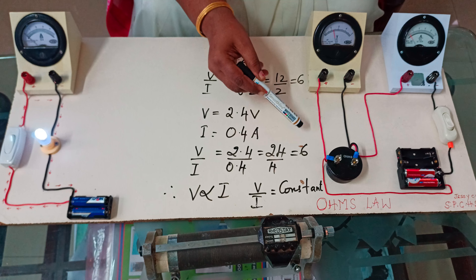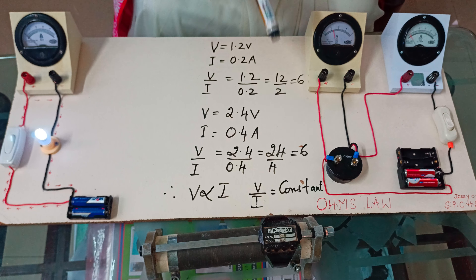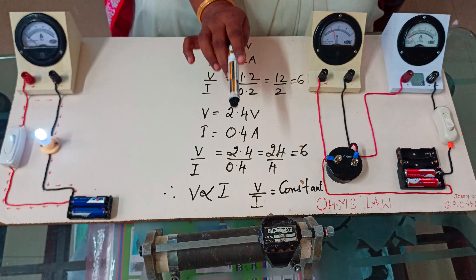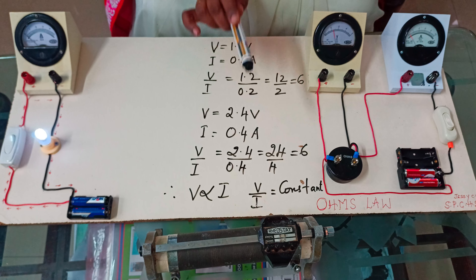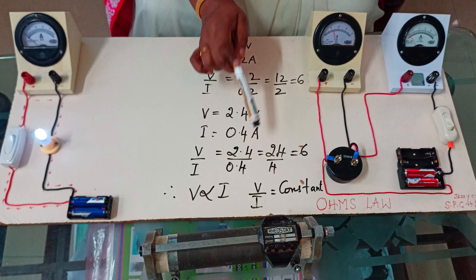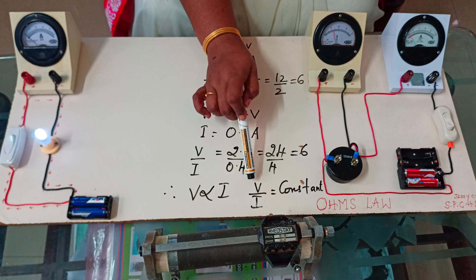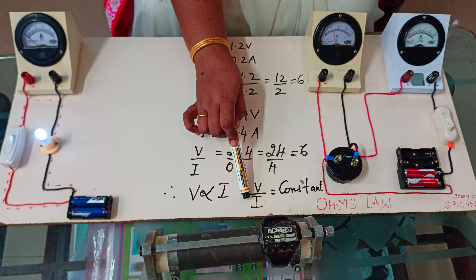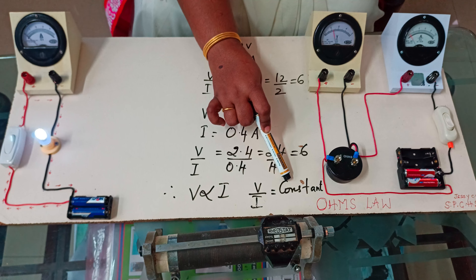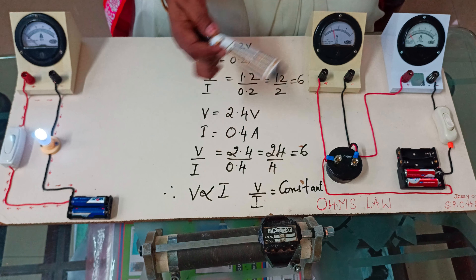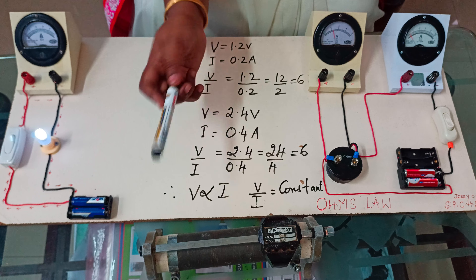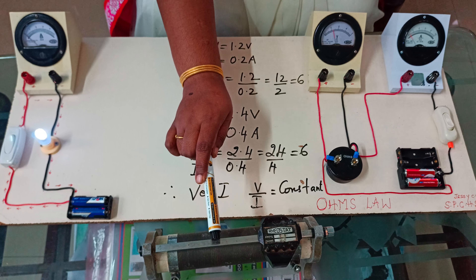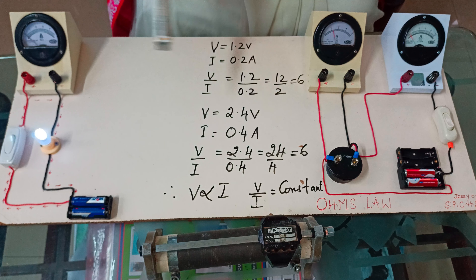Now the second time, what I should do is I have to increase the voltage. How many cells are to connect? Two cells. I have to increase the voltage. Now if I increase the voltage, let us see what is the current reading. Now it is showing around 2.4 volts in the voltmeter and the current reading is 0.4 amperes.